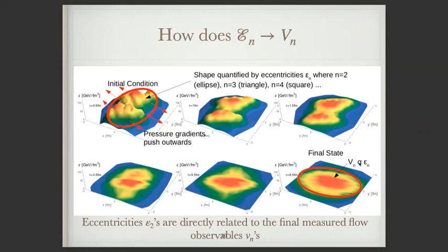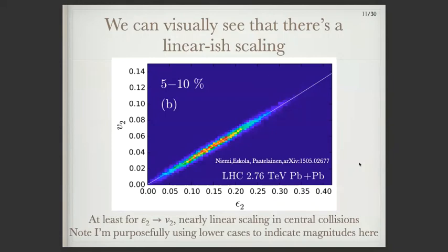If I run a bunch of hydrodynamic simulations and compare eccentricities to final flow harmonics for a fixed centrality class — these are really head-on collisions — and I look at eccentricities versus flow harmonics, you get a nearly perfect straight line. This is again why people talk about linear mapping, because it has such a nice, beautiful straight line in very central collisions. To be clear, I'm only using the magnitudes here, but you can do more accurate quantification with full vectors and get the same result.